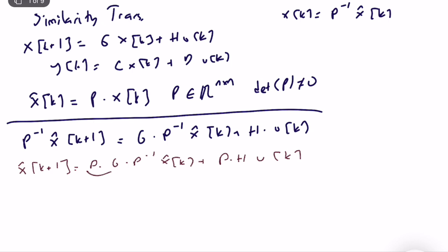This term P·G·P⁻¹ is our new Ĝ matrix, which maps x̂(k) to x̂(k+1), and P·H is our new Ĥ matrix. As you can see, it's very easy to identify the new G and H matrices.